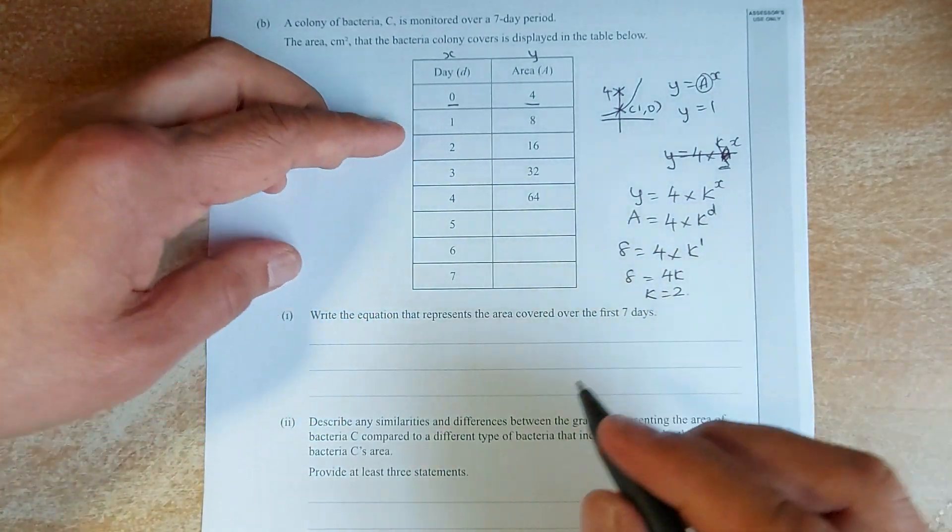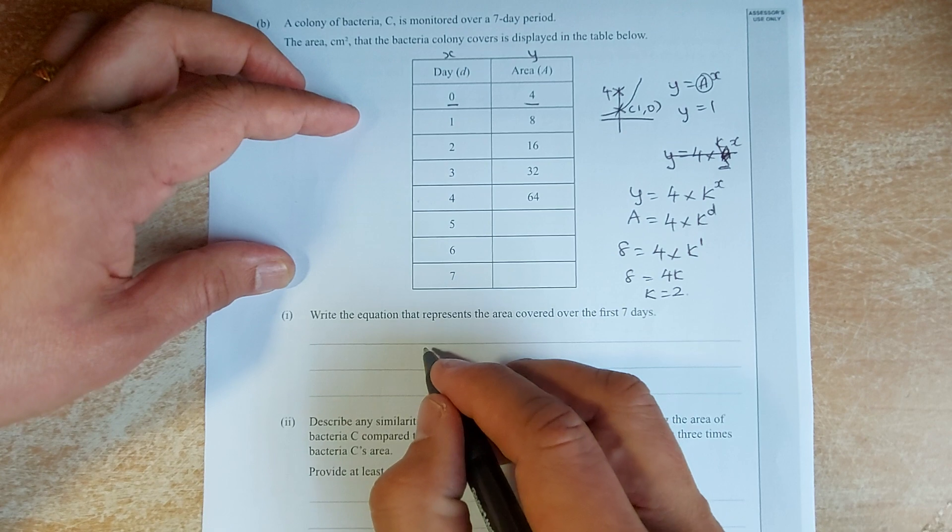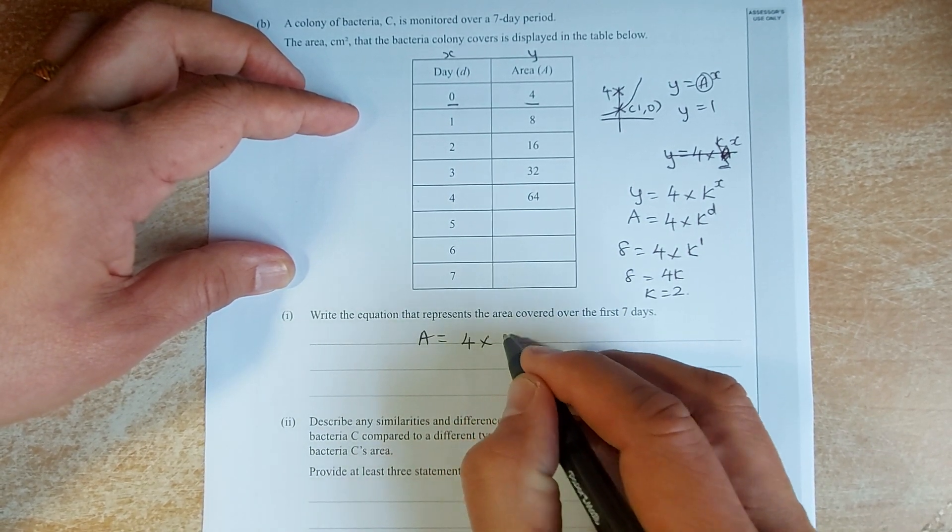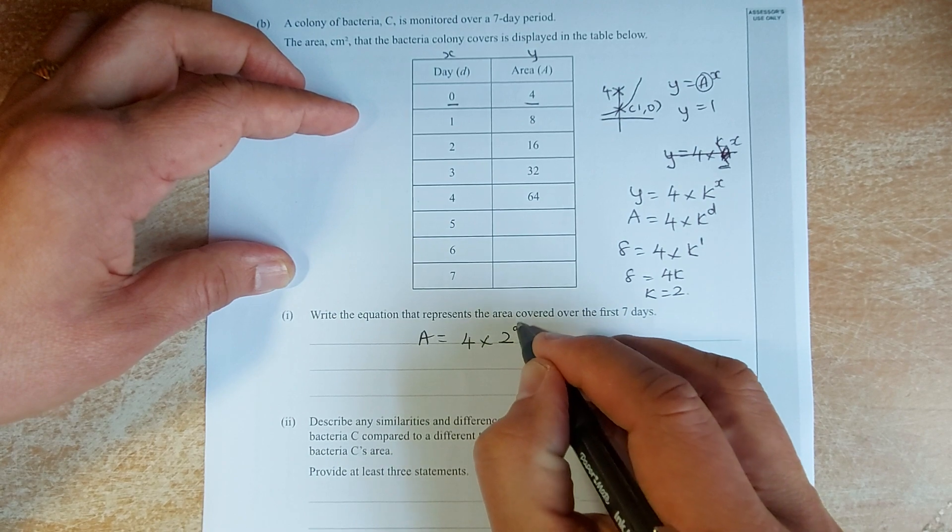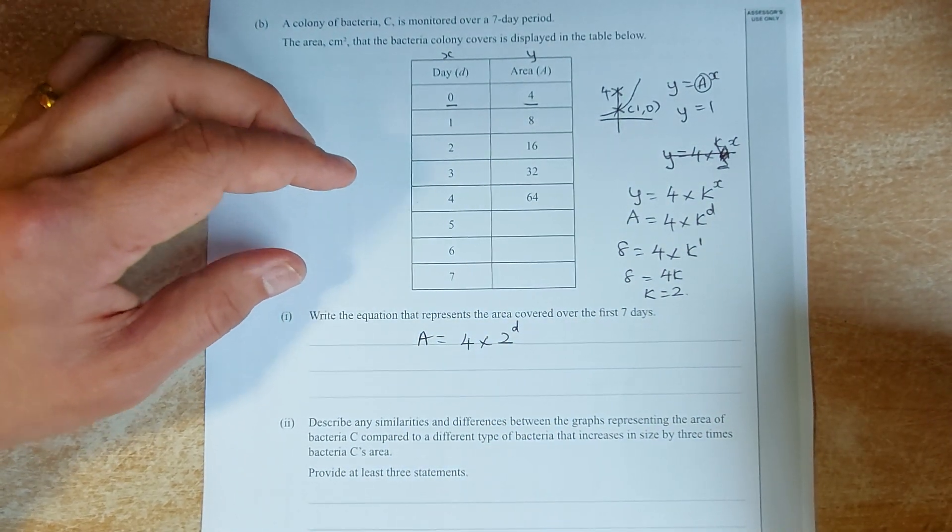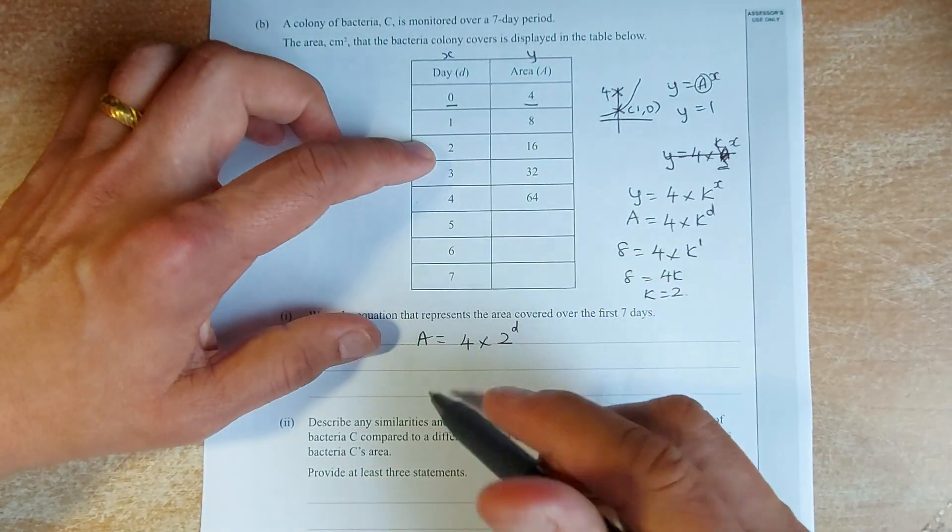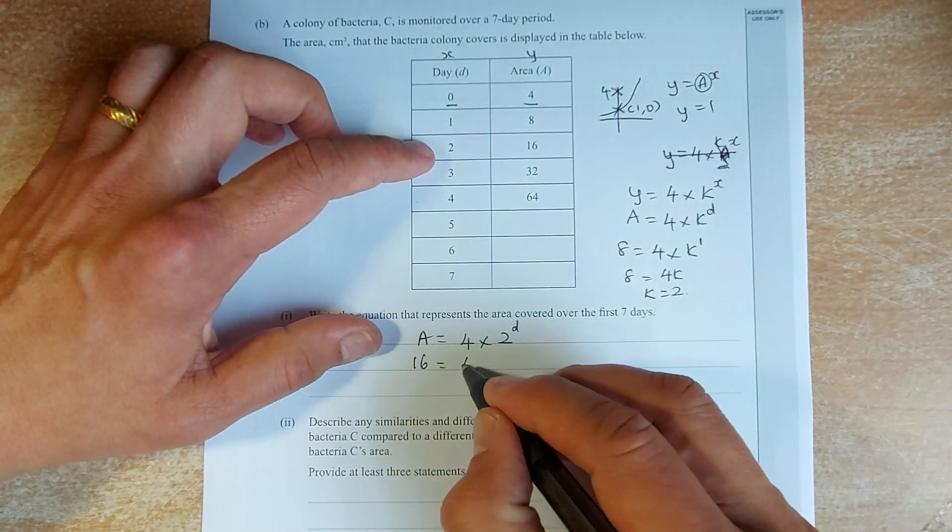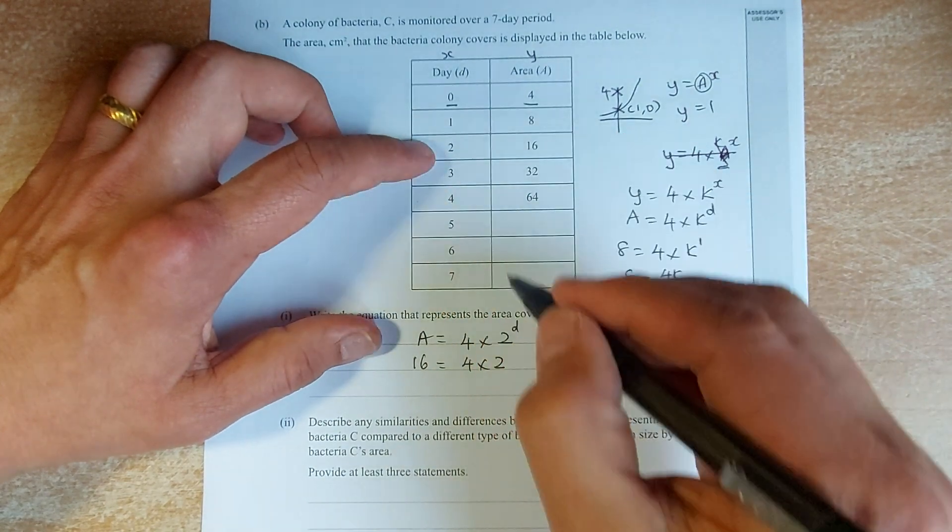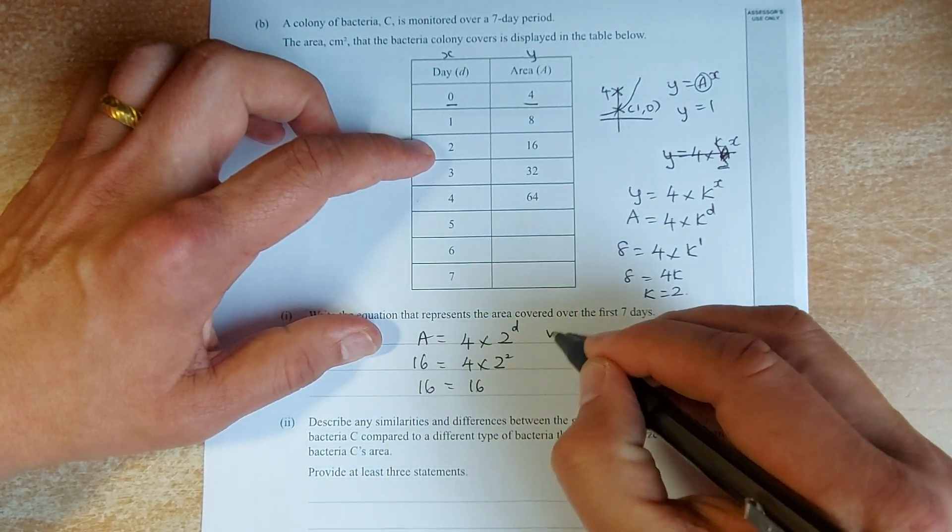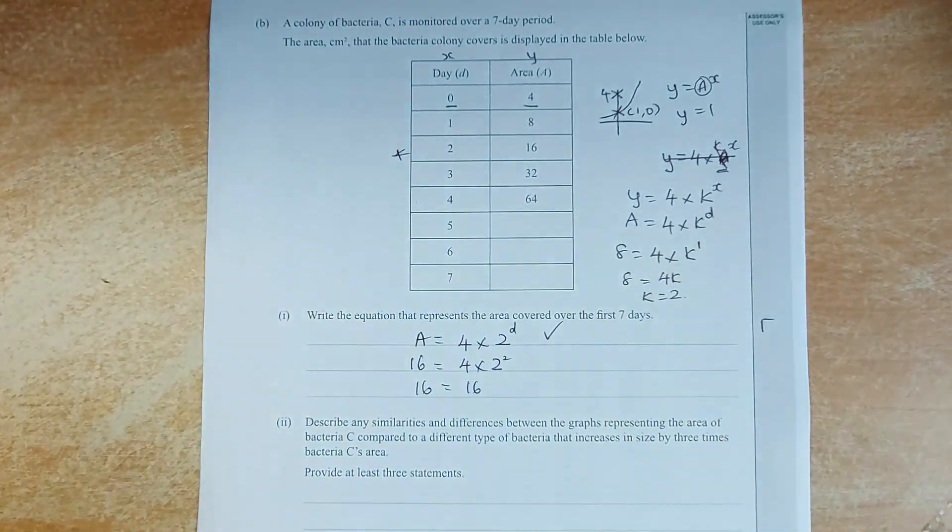So, your equation is going to be, the equation is going to be area equals to 4 times 2 to the power of d. To confirm, your equation is right, we substitute in another equation. So, if your area is 16, 4 times 2 to the power of 2, that is equal to 16. So, that equation is right, and that is another merit.